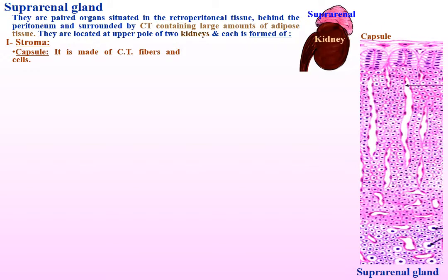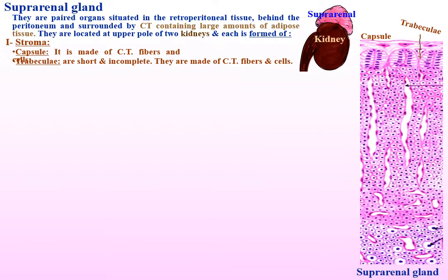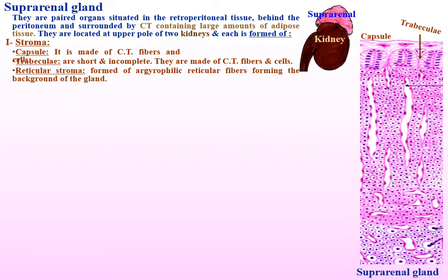Trabeculae are short and incomplete. They are made of connective tissue, fibres and cells, and extend from the deep surface of the capsule. Finally, reticular stroma is formed of argyrophilic reticular fibers forming the background of the gland.